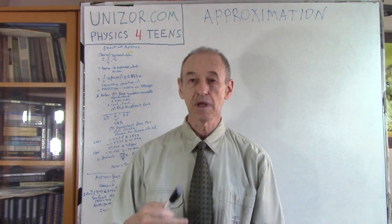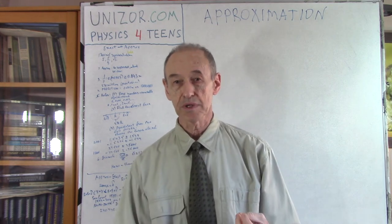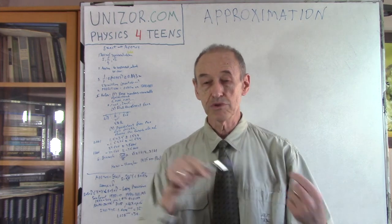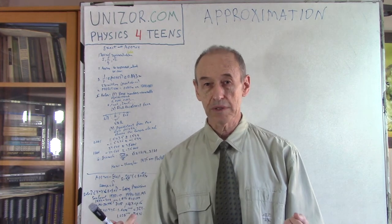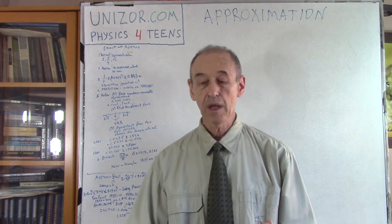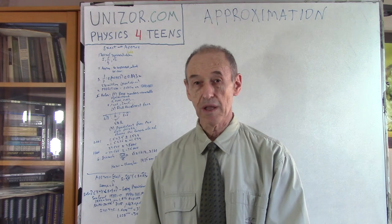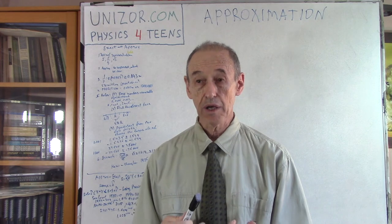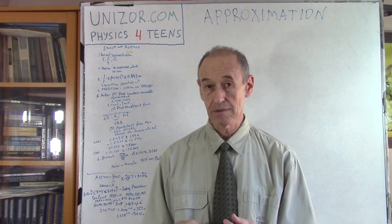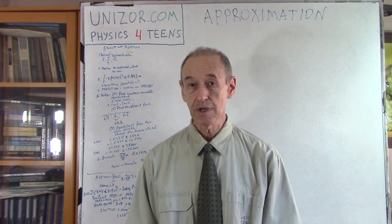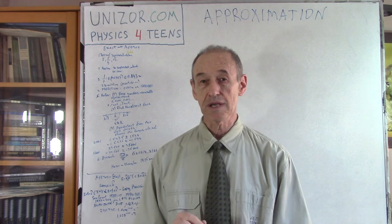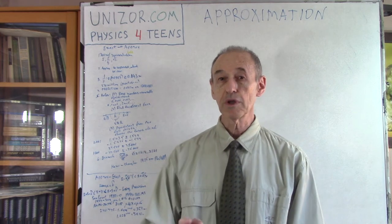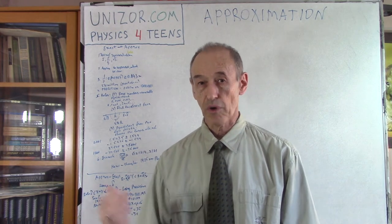Approximation is a replacement of an exact number with an approximate number. It actually has two sides. First, if we do know the exact number, how do we approximate it? There are certain rules we will discuss. The second part is: what if we only know the approximate number and we'd like to do calculations as if it were exact? The question is, by how much are we mistaken? What kind of error is introduced when using approximation instead of the exact number? That will be the second part of this lecture.